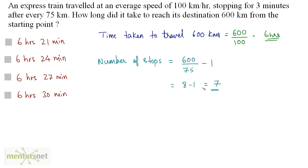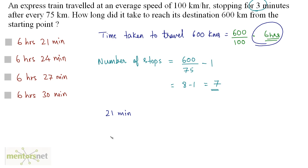At each stop this train stops for 3 minutes, so the total time taken in stoppages is 3 times 7, that is 21 minutes. The total time taken to travel 600 km plus the time taken to stop is 21 minutes plus 6 hours — and that's the answer, option A: 6 hours 21 minutes.